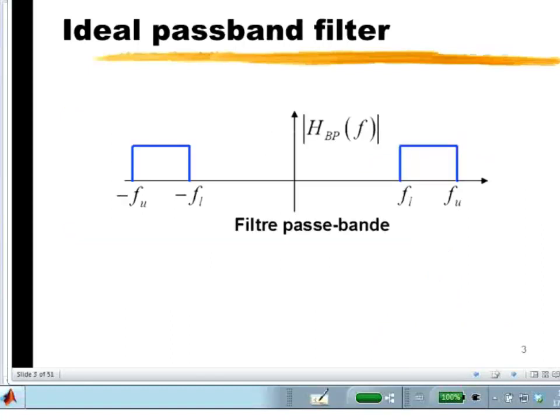We could have also an ideal bandpass filter. They're called ideal filters because they're perfectly square, and they may not be realizable, but they're used as good approximations for certain situations.